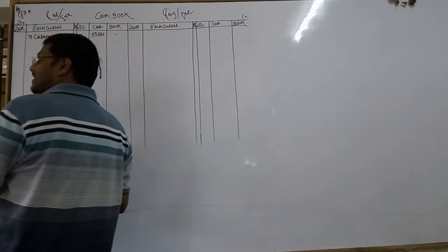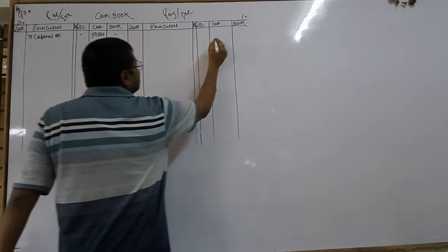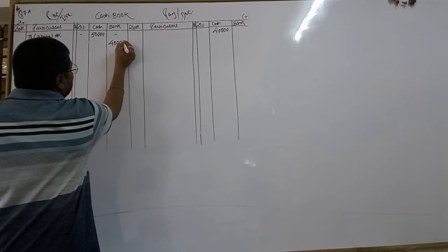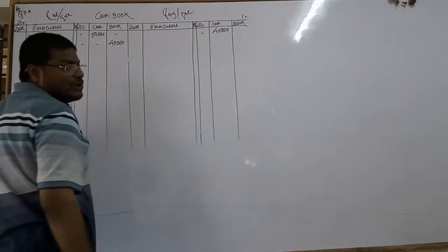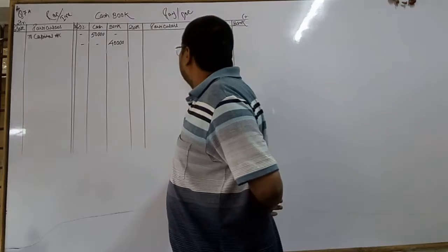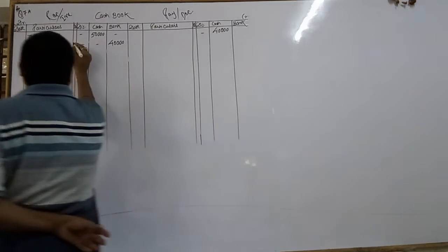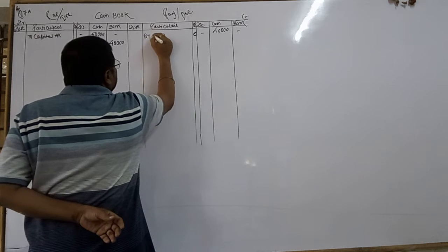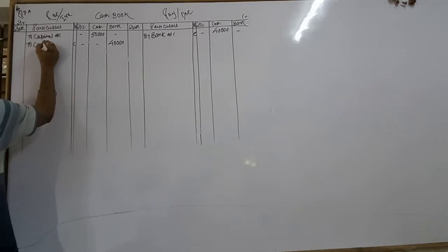Second transaction, deposited in bank rupees 40,000. So bank balance is 40,000 and cash balance is 40,000. In the previous video, I told you that the contra entry is when the transactions are recorded on both sides of cash book. Which column? Cash. To main kya likhun ga? By bank account. Which column? Bank. To main kya likhun ga? To cash account.